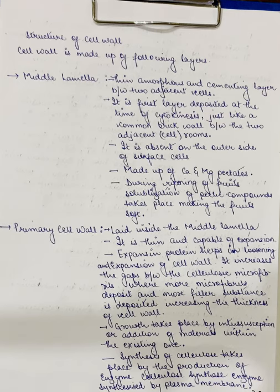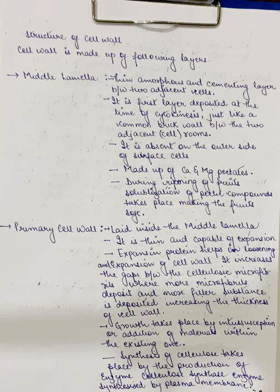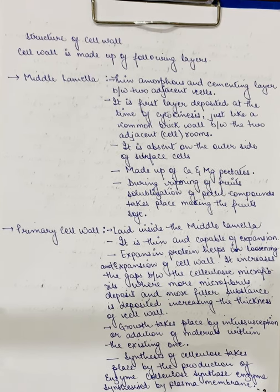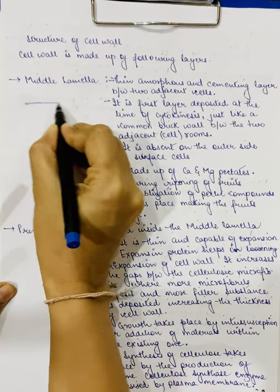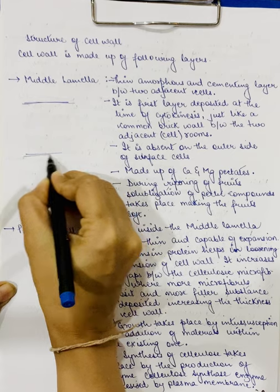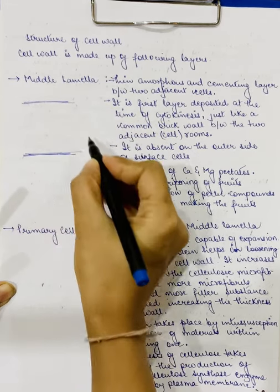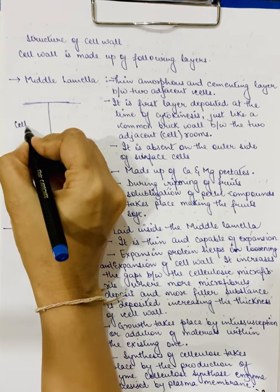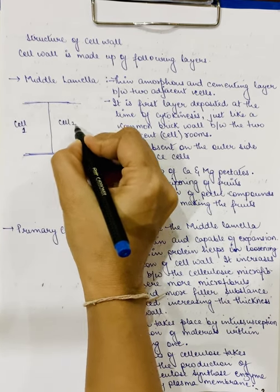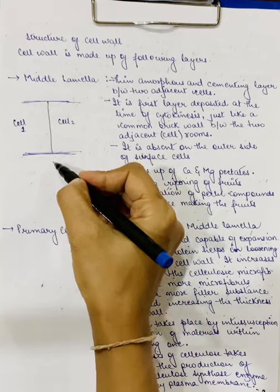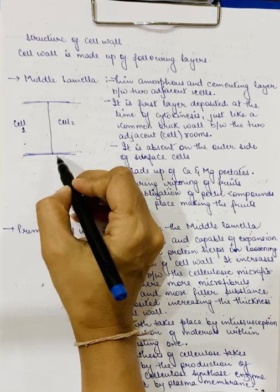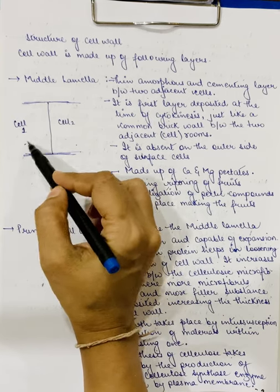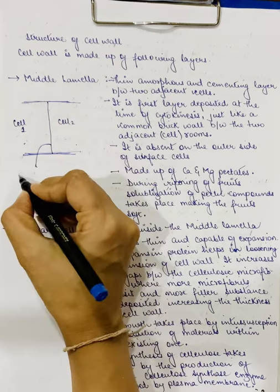How many layers does the cell wall have? If I draw two cells — cell 1 and cell 2 — in between these two cells there is a common cell wall. This common cell wall, which divides the two cells, is called the middle lamella. So, the middle lamella is the wall that is common between two adjacent cells.